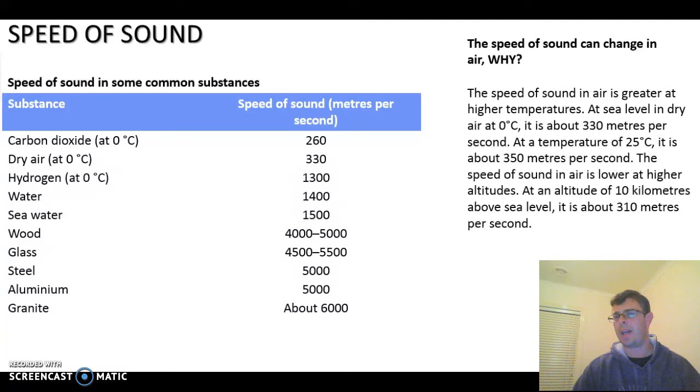Remember, for the sound to travel through something faster, there's got to be something that happens to the particles. You want to find out why at zero degrees it moves at a certain speed, and why at 25 degrees it actually moves around about 20 meters a second faster. Also, at an altitude of 10 kilometers above sea level, it drops its speed by about 20 meters per second. Why is the speed of sound slower at 10 kilometers altitude than what it is at sea level?